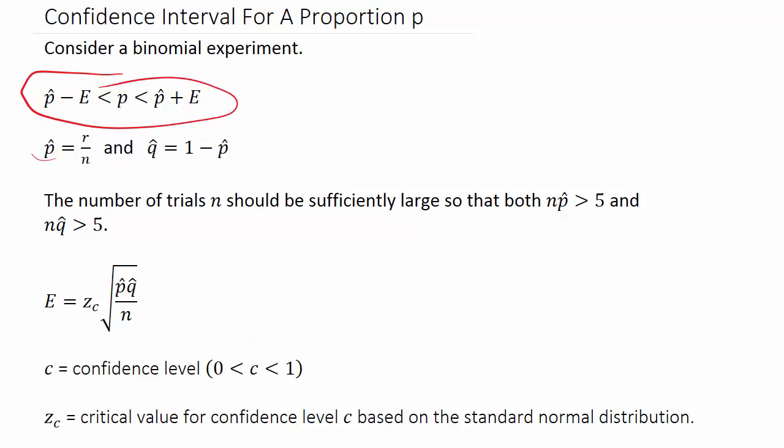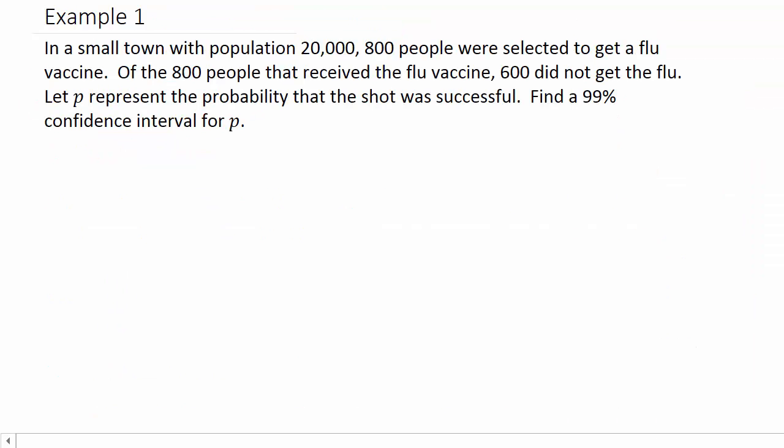Let's take a look at an example. In a small town with population 20,000, 800 people were selected to get a flu vaccine. Of the 800 people that received the flu vaccine, 600 did not get the flu. So 600 of them were successful. Let P represent the probability that the shot was successful. Find a 99% confidence interval for P.